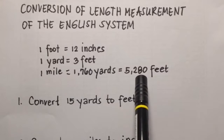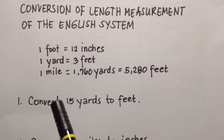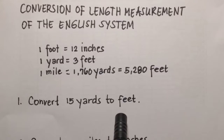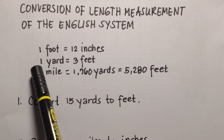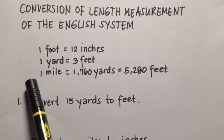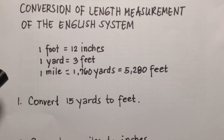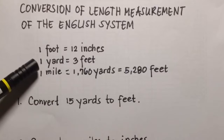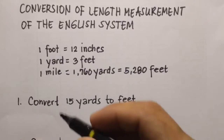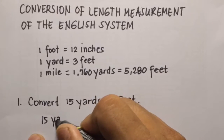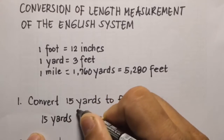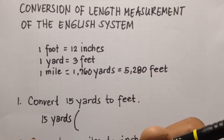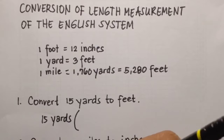1 mile is also equal to 5,280 feet. For example, number one: convert 15 yards to feet. Looking at the conversion factors, we can use 1 yard equals 3 feet. We'll multiply 15 yards by this conversion factor using the cancellation process.